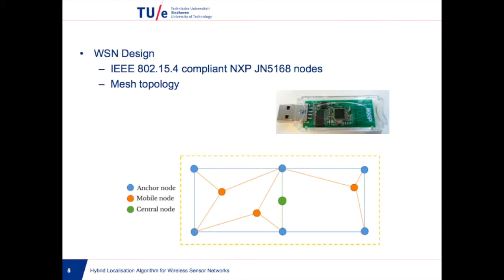For the wireless network design, we chose to use IEEE 802.15.4 compliant NXP nodes because of their implementation simplicity and low power consumption. The network topology used is mesh, placing the anchor nodes at the corners.